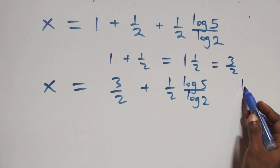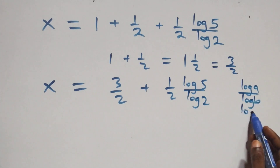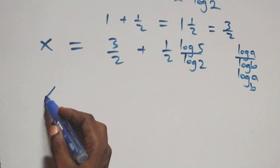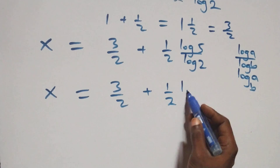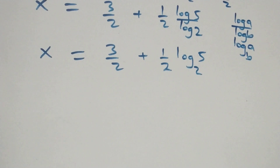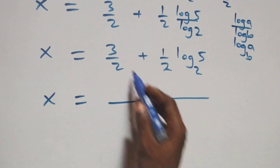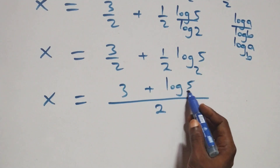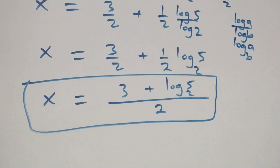Applying the change of base formula, log a over log b is the same as log a to base b. So what we have becomes x equals to three over two plus one half log five to base two. Bringing this together as one fraction, we get x equals to three plus log five to base two, all over two.